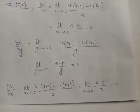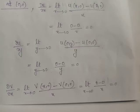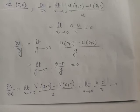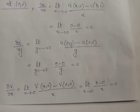Similarly, ∂v/∂x is evaluated by keeping y constant at y = 0. By the limiting definition, ∂v/∂x = limit as x tends to 0 of [v(x,0) minus v(0,0)] divided by x, which equals 0. Since v(x,y) = 0 at every point, v(x,0) is always 0.